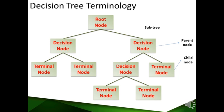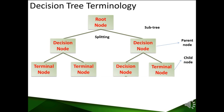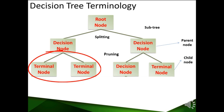The process of growing the tree is called the splitting process. The process of cutting down a tree or removing sections of it is called pruning. The process of adding a whole section to a tree is called grafting.